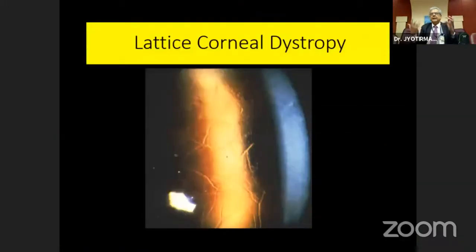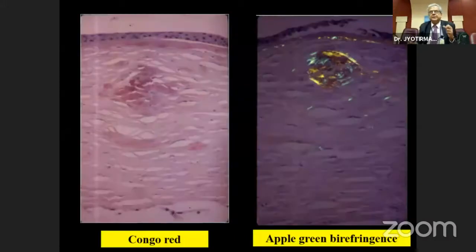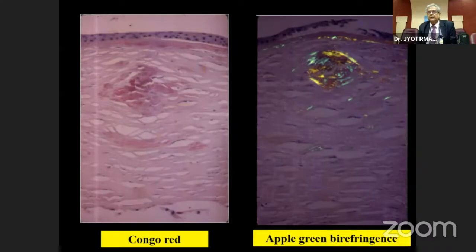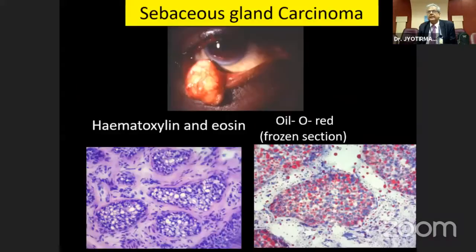In lattice corneal dystrophy, histopathology staining shows rose-red colored deposits with Congo red, and with polarized light you can see the apple-green birefringence, which looks very elegant.